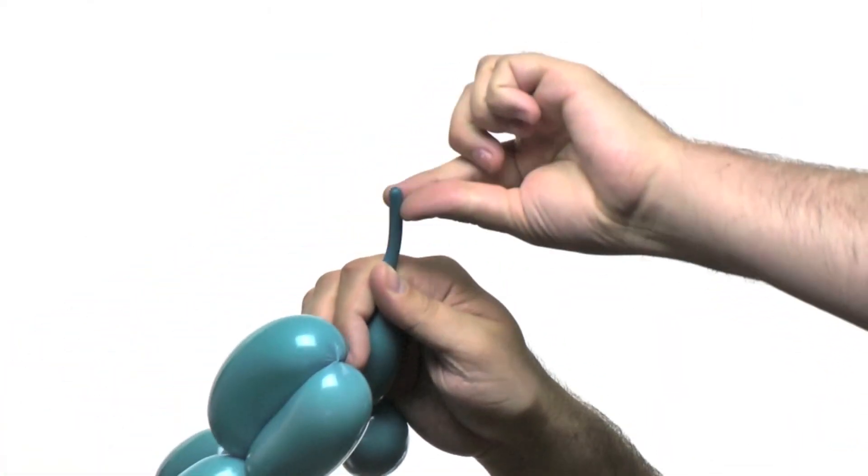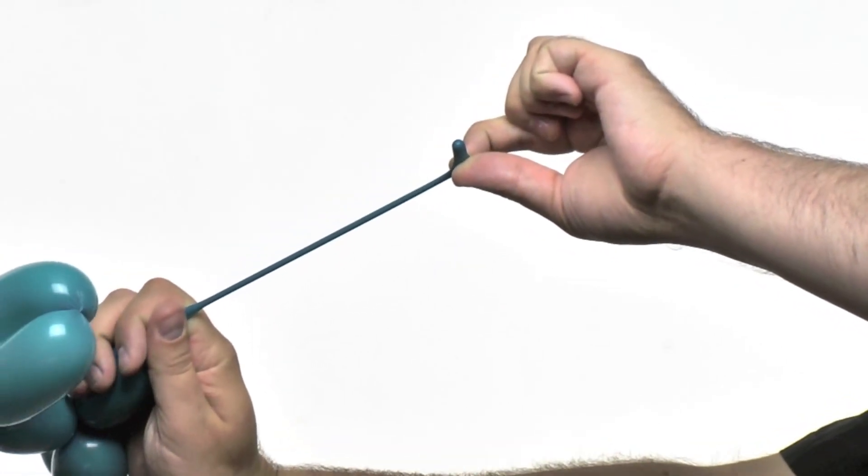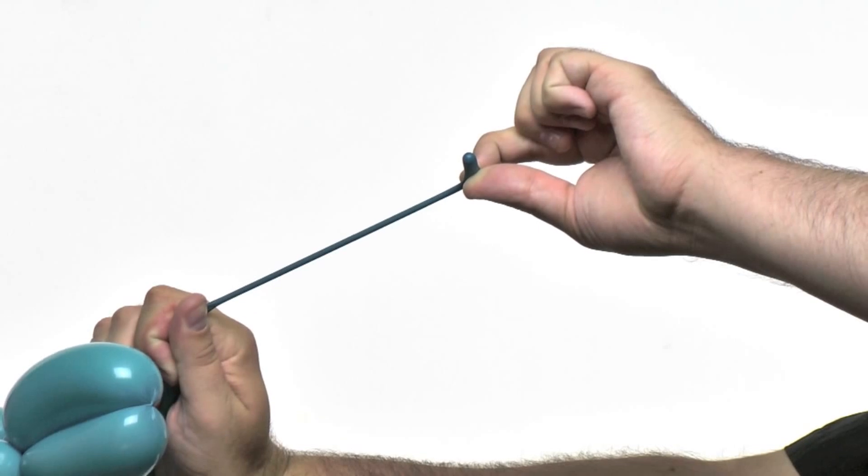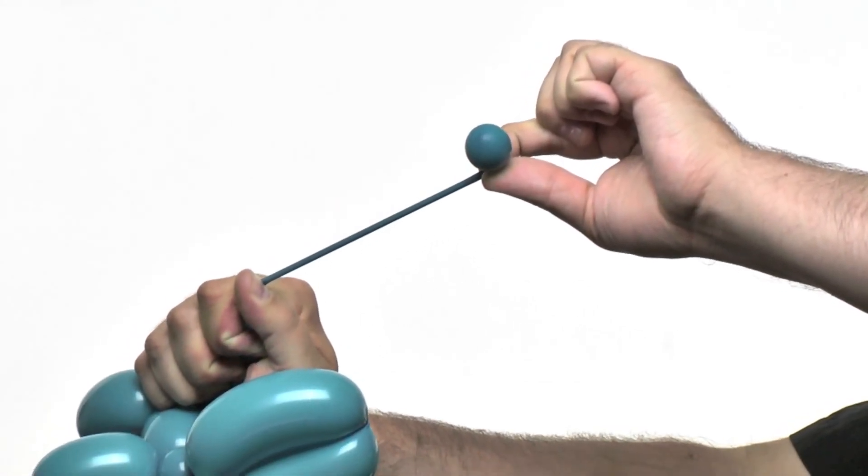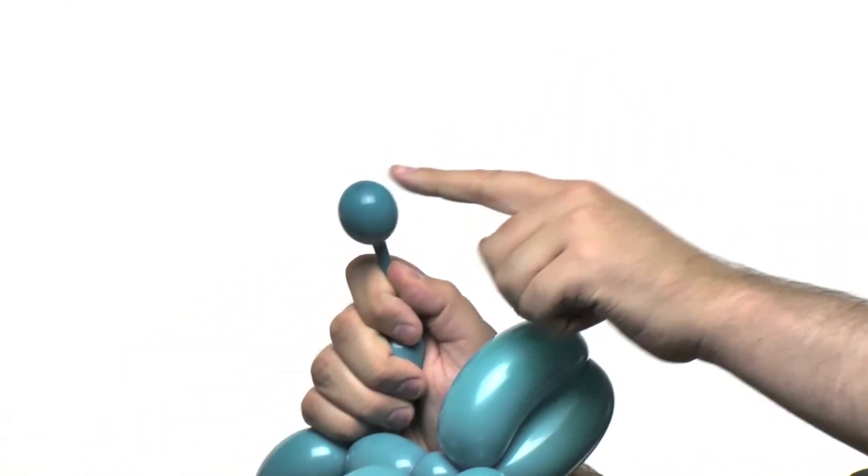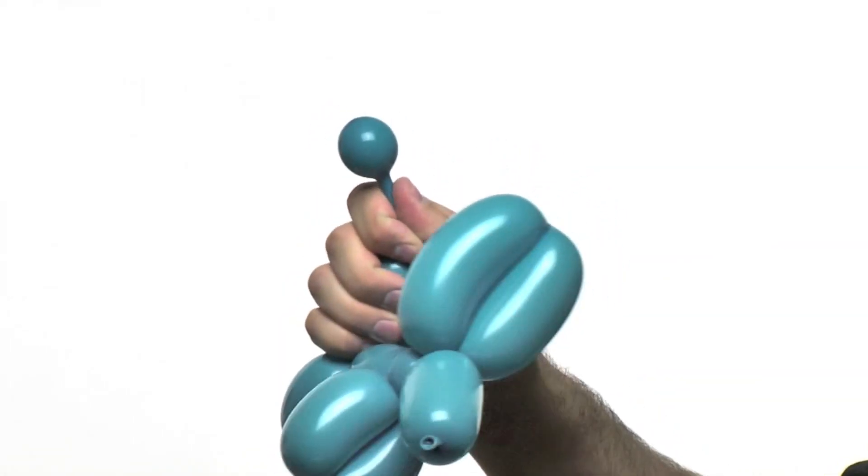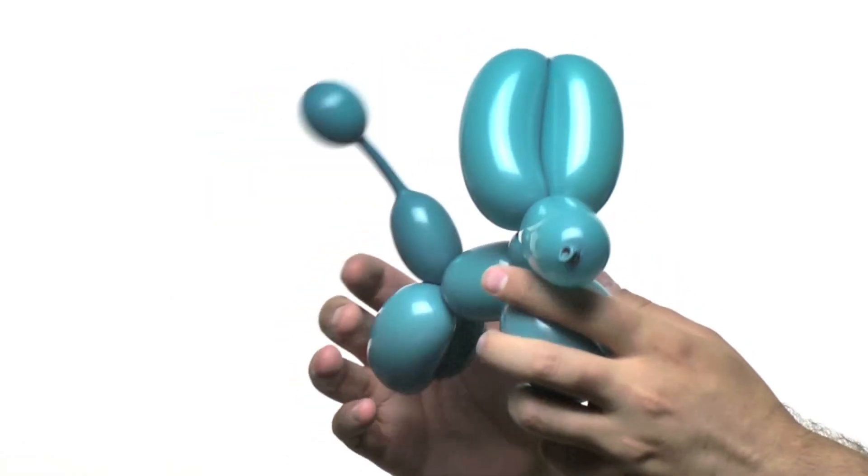By squeezing the air down and by stretching the end out, what we end up doing is creating a localized vacuum so that when I squeeze the air, the only place for it to go is the part with the lowest pressure, the end. Giving it a couple more squeezes and there we have our poodle tail.